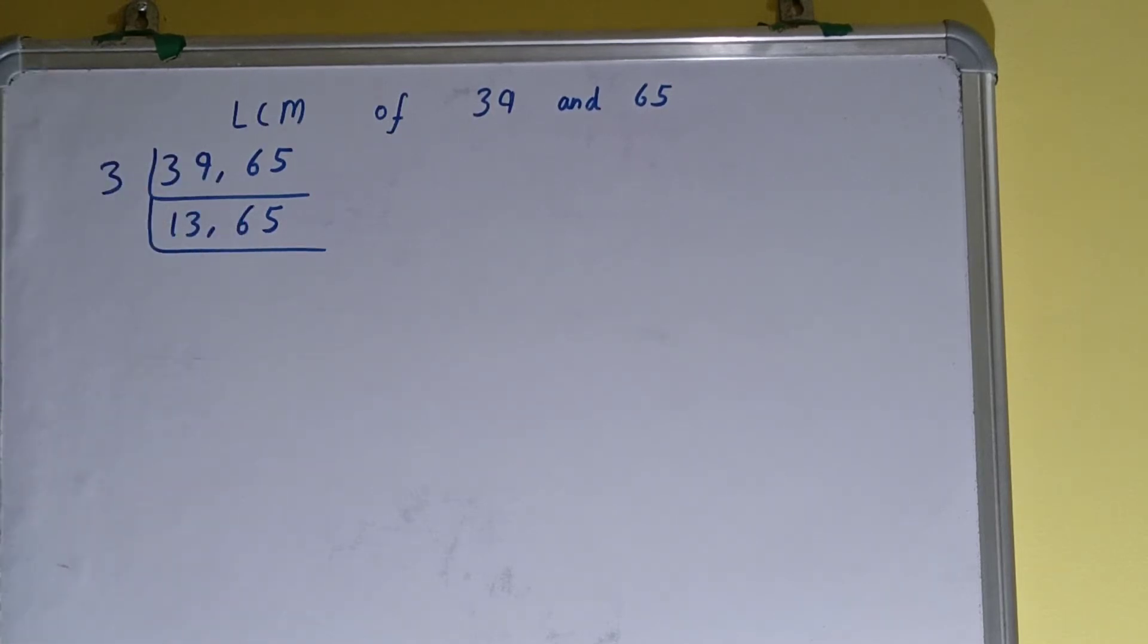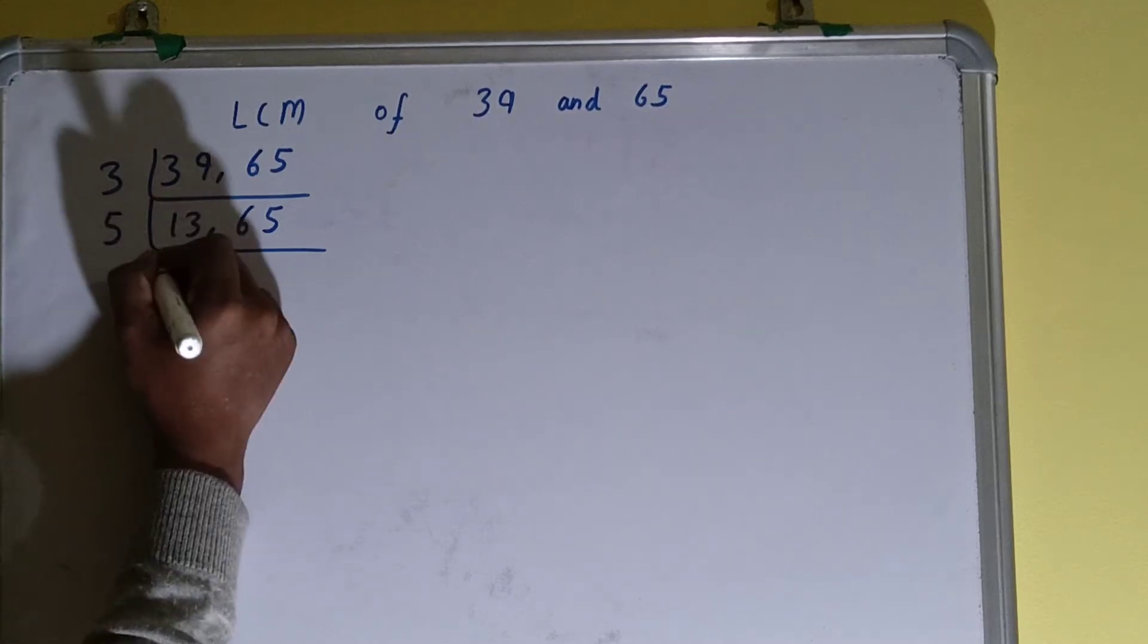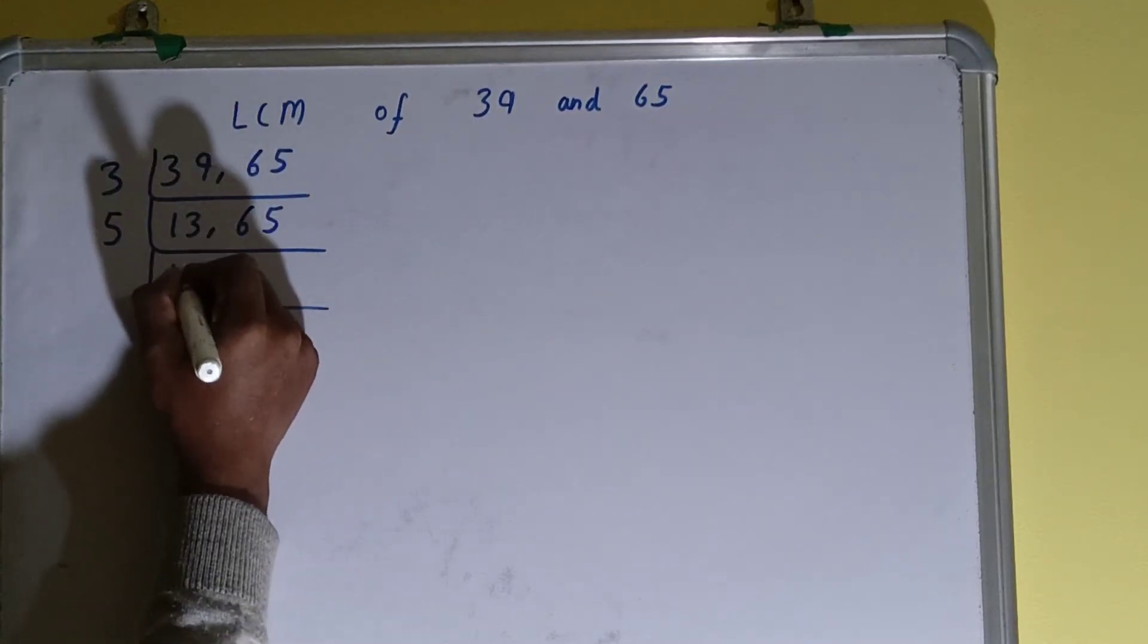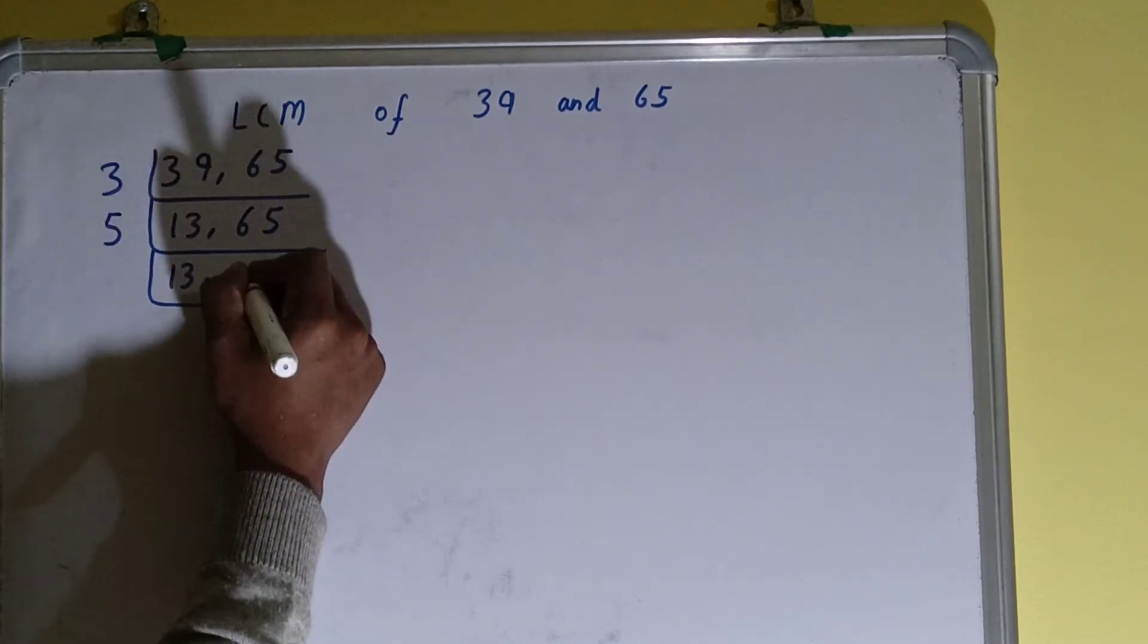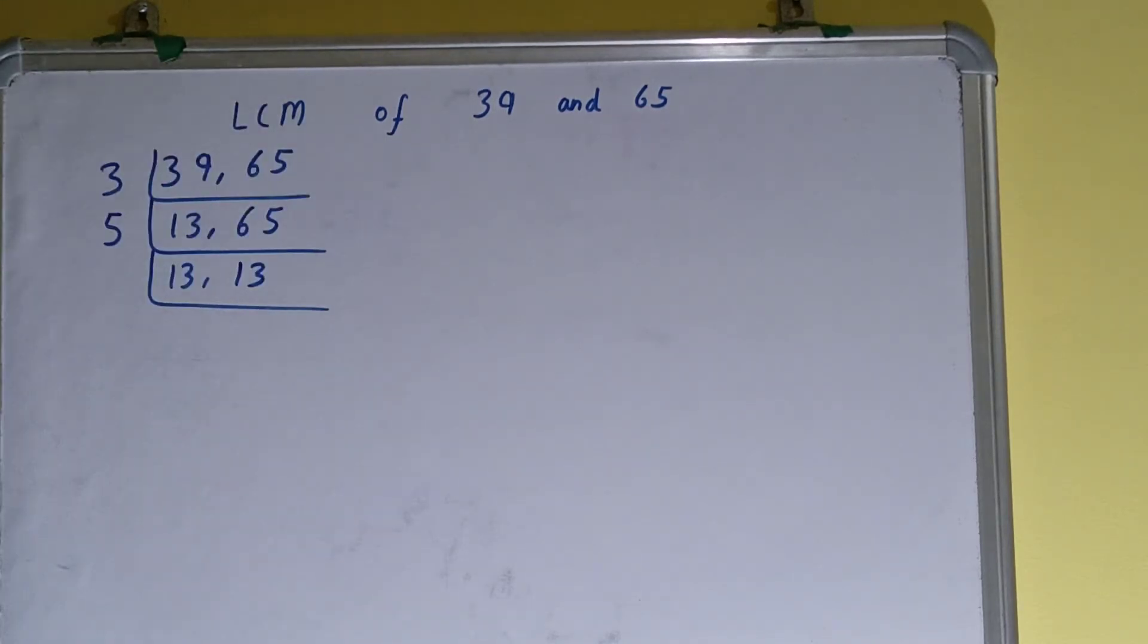So we'll divide only the second number, and the first one we'll just copy down. The second number on dividing by 5 will become 13.